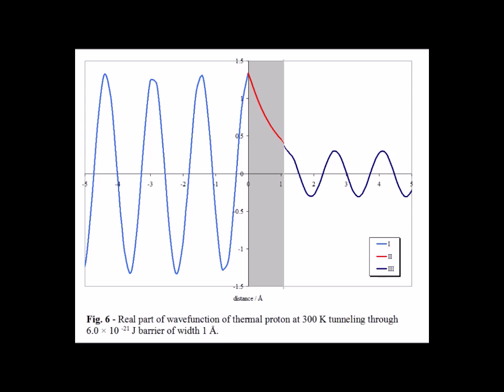In the next four figures, the tunneling particle will be a proton, H+, which is chemically relevant to Bronsted-Lowry chemical reactions of an acid-base sort. Note in the next four figures that the tunneling barrier is smaller than in the case of the electron. Here, the barrier width is 1 angstrom, 10 to the minus 10 meters. And also note that the potentials are smaller. In figure 6, the potential is 6 times 10 to the minus 21 joules.